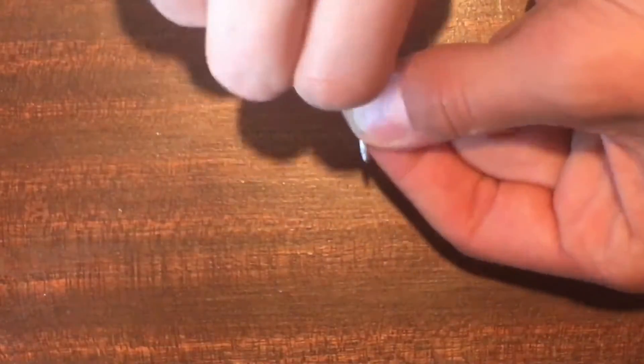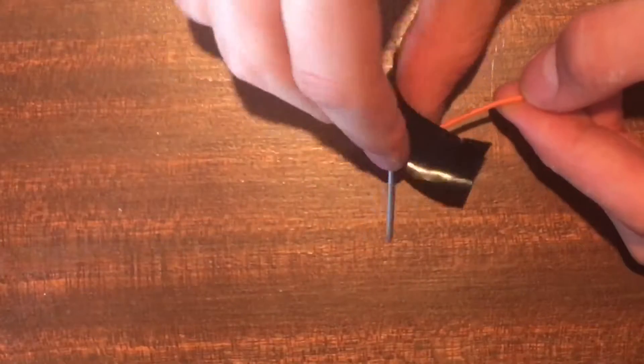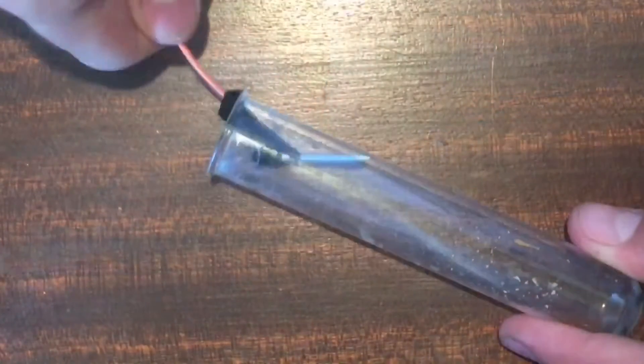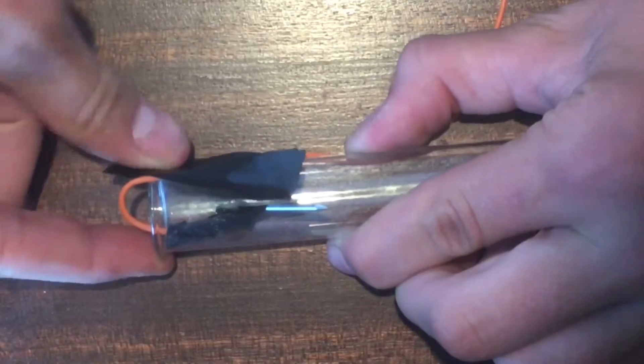Then wrap one of the wires from one of the alligator clips around a nail and secure it with duct tape or solder. Then insert the nail inside a test tube and secure it firmly with duct tape. Do that for the other one as well.